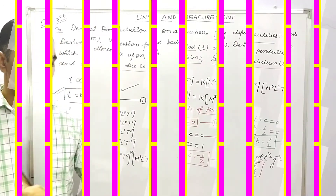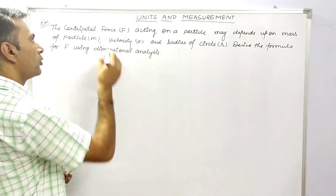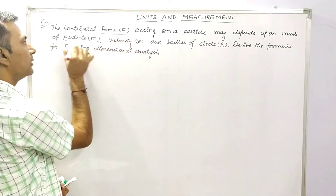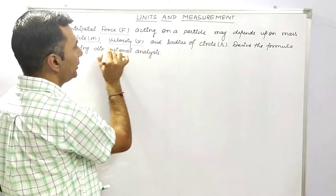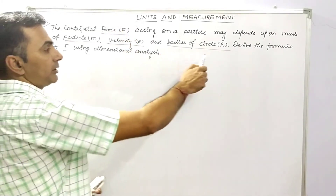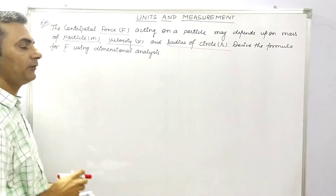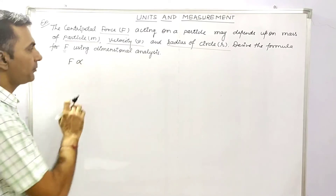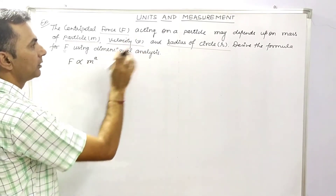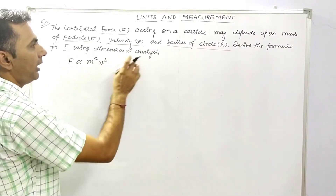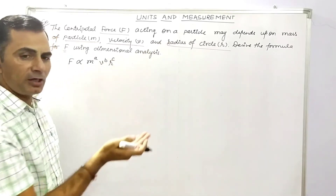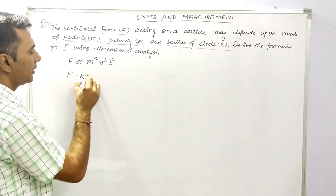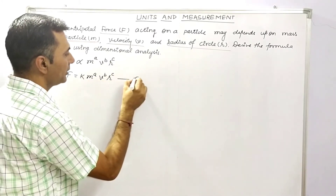Let's look at the second example: the centripetal force F acting on a particle may depend upon the mass of the particle m, velocity v, and radius of the circle r. We have to find the formula for F using dimensional analysis. So, F is directly proportional to m raised to power a, v raised to power b, and r raised to power c. Therefore, F = k times m^a times v^b times r^c — this is equation number 1.